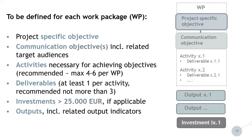At the level of each work package, it is necessary to define a project specific objective, the related communication objectives including target audiences, and the activities necessary for achieving these objectives. We recommend a maximum of four to six activities per work package, though more is possible if justified by complexity. For deliverables, there should be at least one per activity, and we recommend no more than three to avoid fragmentation — though more is acceptable for long-duration or complex activities.